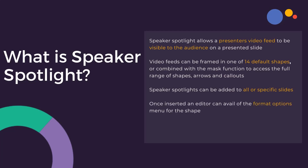Speaker Spotlights can be added to all slides or specific slides as chosen by the slide editor. Once inserted, an editor can use the Format Options menu for the shape in order to resize, rotate, position, and add drop shadow. A Speaker Spotlight can also be animated, allowing the presenter to introduce the spotlight in a timely and engaging way.